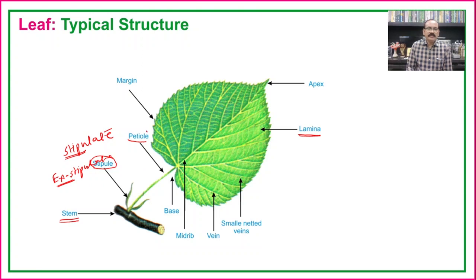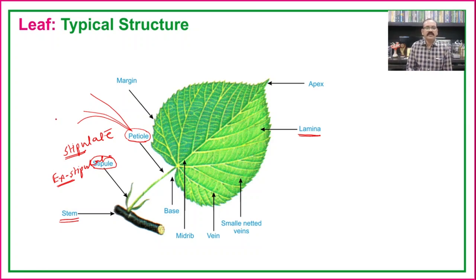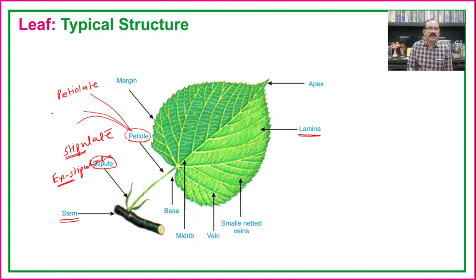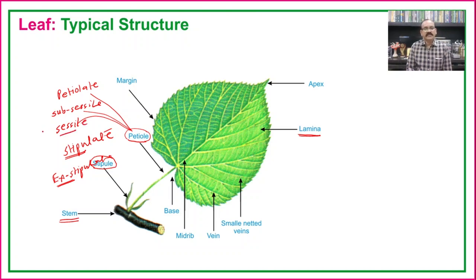The petiole may also be present or absent. There are three types based on this: if the petiole is present, the leaf is known as petiolate; if the petiole is present but very small, it is known as subsessile; and if the petiole is completely absent, it is known as sessile.